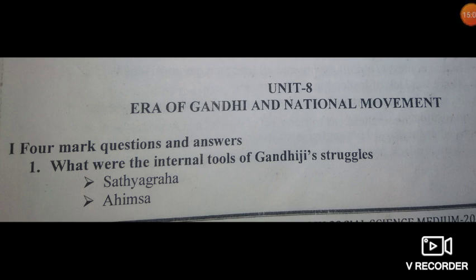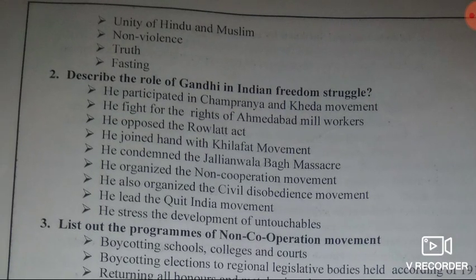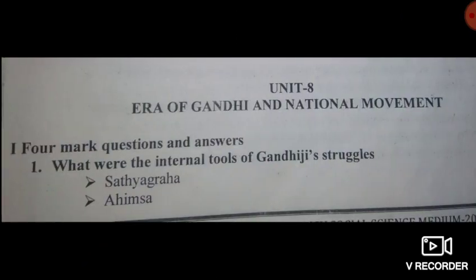Now let's move on to another very important chapter in History Part 2 — the 8th lesson: Era of Gandhi and National Movement. This chapter is very important for your examination and is asked for four marks. The first question: what were the internal tools of Gandhi's struggle? The internal tools are: Satyagraha, Ahimsa, unity of Hindus and Muslims, non-violence, truth, and fasting.